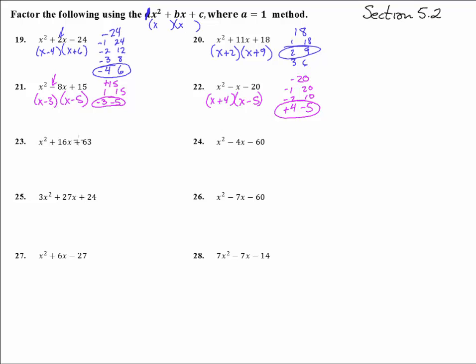Number 23: x² plus 16x plus 63. Let's think. What times to 63? 1 and 63. 2 doesn't go into it. 3 goes into it 21 times. 4, no, 5, no, 6, 7 - oh, 7 times 9, yeah. There it is. 7 and 9 add to 16. So we're at x plus 7, x plus 9.